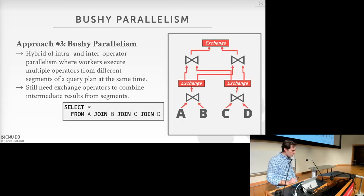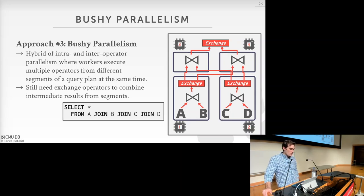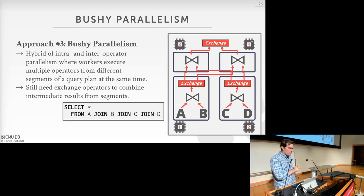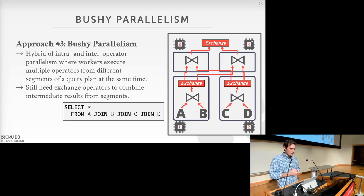Bushy parallelism combines intra and inter-operator parallelism, grouping operators to balance the amount of work each worker does. The exchange operator is still needed to combine intermediate results. For example, one worker does the join between A and B, another does the join between C and D, those go through the exchange, and then feed into the final join. The DBMS can arrange intra and inter-query parallelism in arbitrary ways to get an optimal split across available workers.